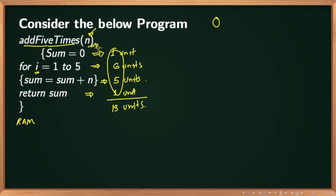Whatever may be the size of the input, this algorithm is always going to take only 13 units of time. That is, the algorithm's time complexity here is constant. We represent this as O(1), so the complexity of this particular program is O(1).